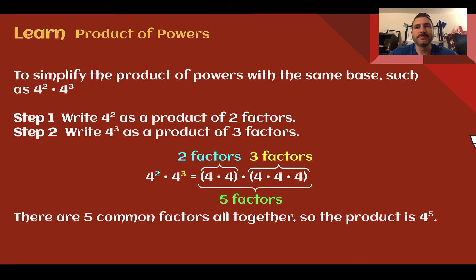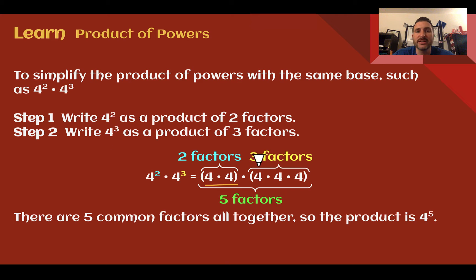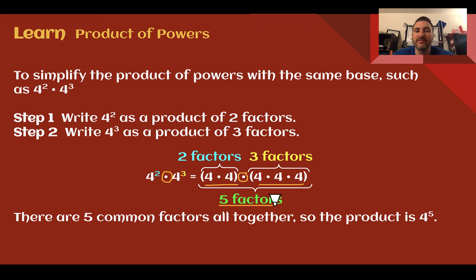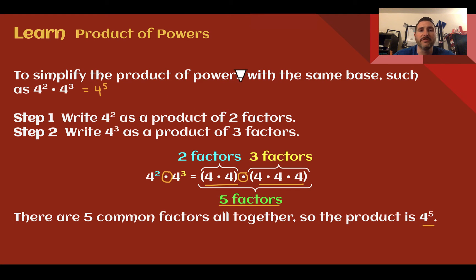Let's learn. Product of powers. To simplify the product of powers with the same base, such as 4 squared times 4 cubed, we're going to write each of them out as a product of factors. So 4 squared is two factors: 4 times 4. 4 cubed is three factors: 4 times 4 times 4. Since we are multiplying in the middle, we're really just multiplying 4 five times, which makes it 4 to the fifth power.